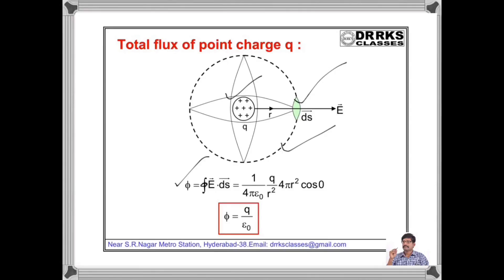We know that electric field E = (1/4πε₀)(q/r²). The total surface area of the sphere is 4πr² and the angle between E and ds is 0, so cos(0) = 1. Then the total flux coming from a point charge is equal to (1/ε₀) times the charge.